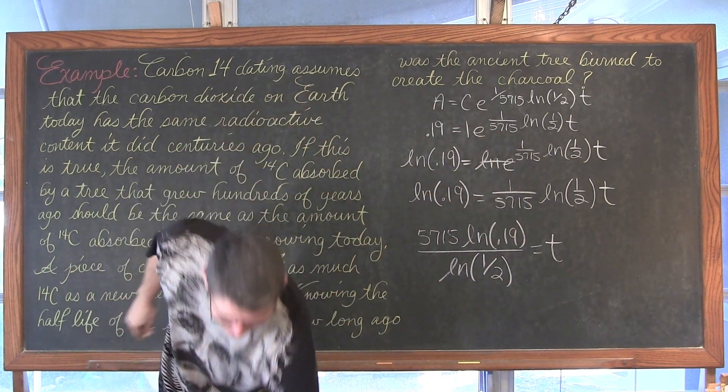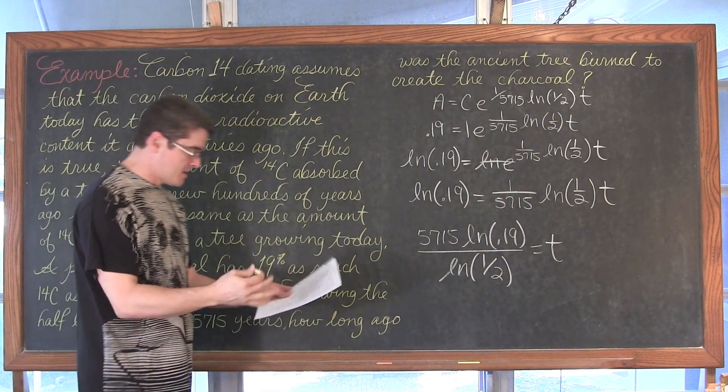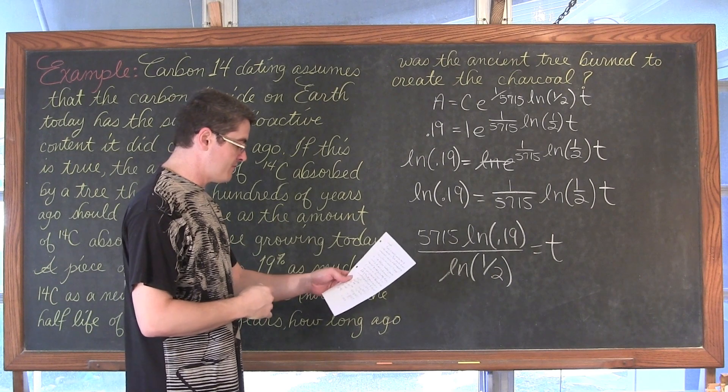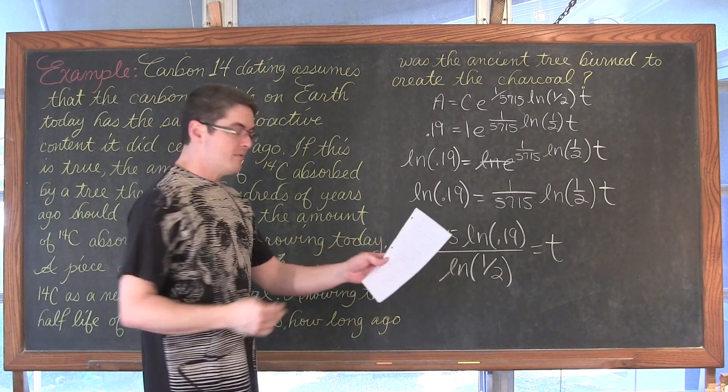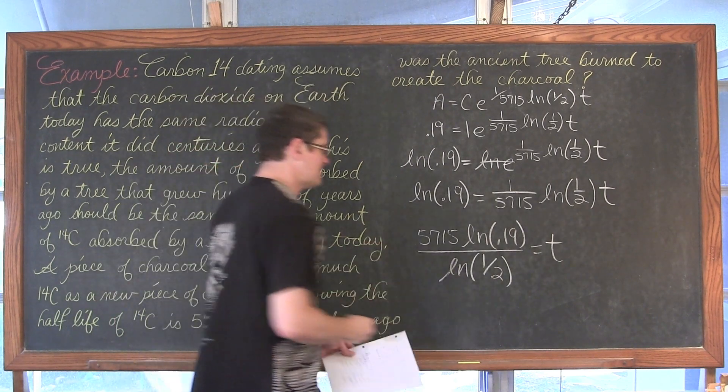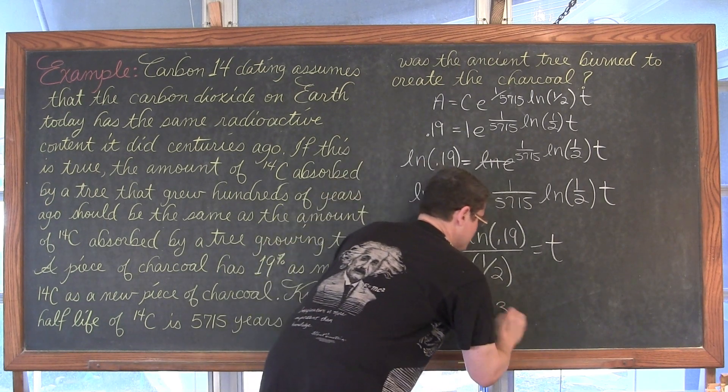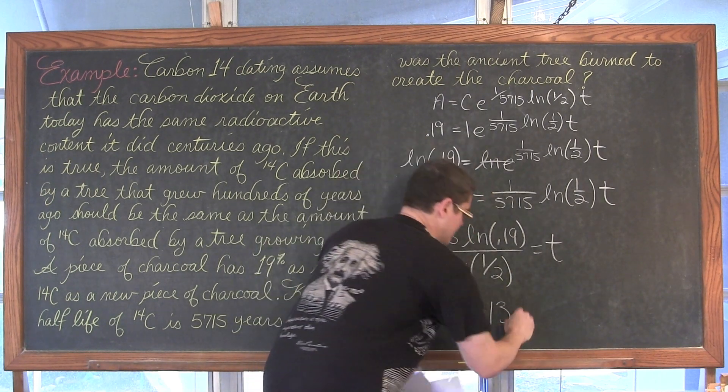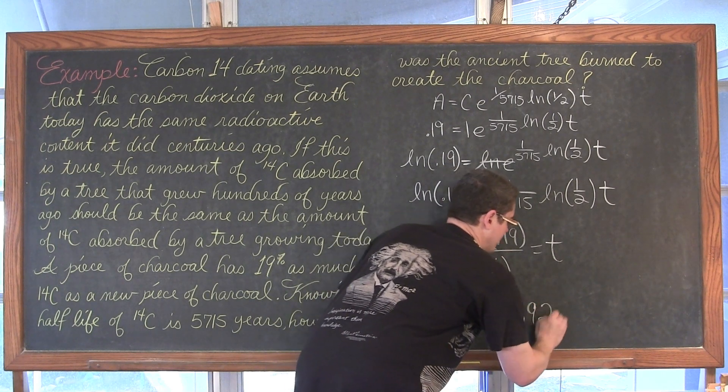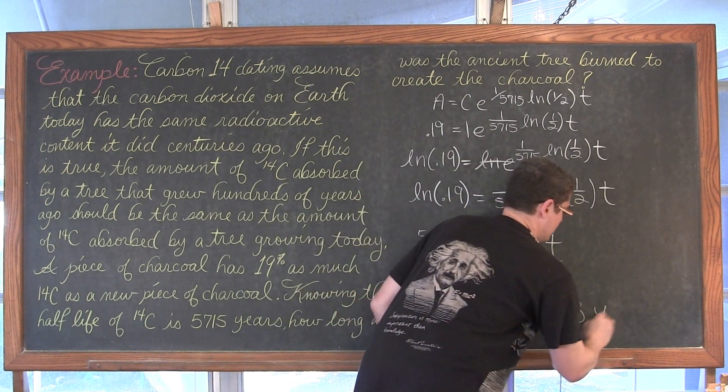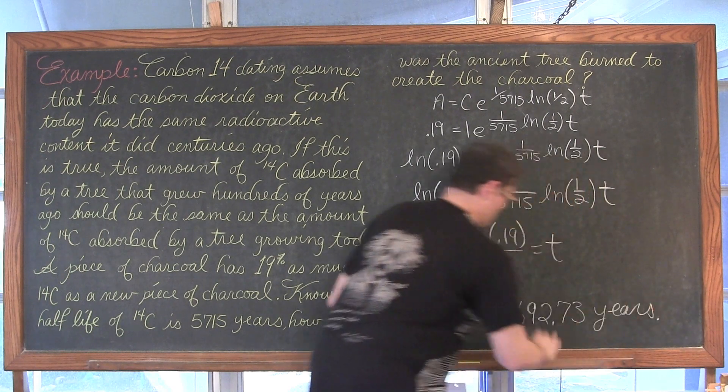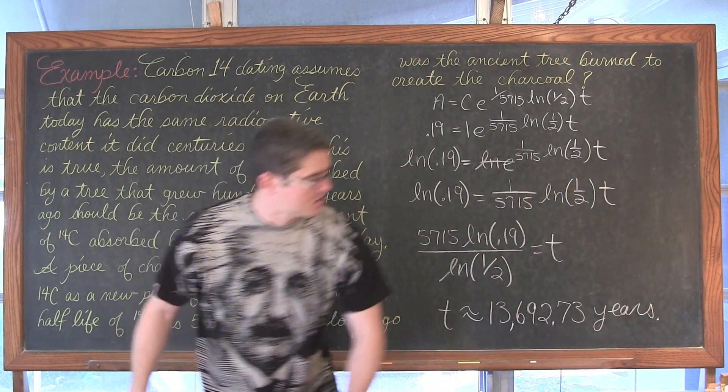With our scientific calculators, we can type so much of that in at once and not have hardly any roundoff error. I'm going to round mine off to the nearest hundredths place. t comes out to be approximately 13,692.73 years old, and that is one old chunk of charcoal.